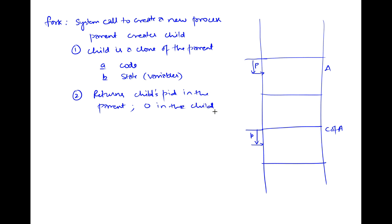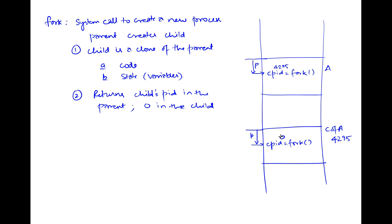The second important thing about the fork system call is that it returns the child's PID in the parent and 0 in the child. For example, if we have CPID = fork(), and the child of A has a PID of 4295, then in the parent CPID will be 4295, and in the child CPID will be 0. We use these facts to make the child's functionality differ from its parent.